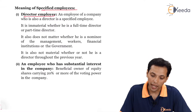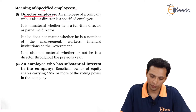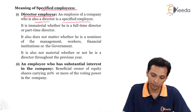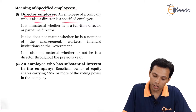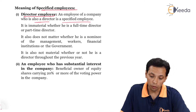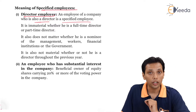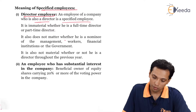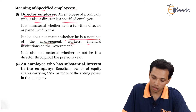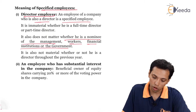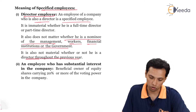Regarding the meaning of specified employees — the first category is a director employee: an employee of a company who is also a director is a specified employee. It is immaterial whether he is a full-time director or a part-time director. It also doesn't matter whether he is a nominee of the management, workers, financial institutions or the government. It is also not material whether or not he is a director throughout the previous year.